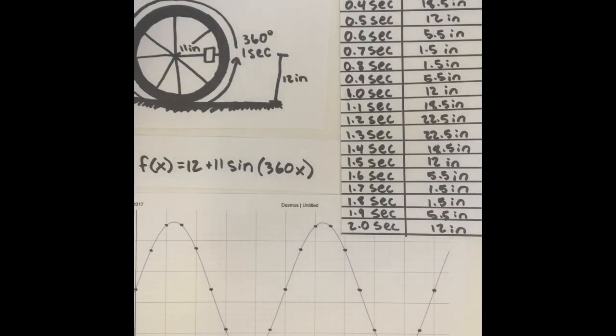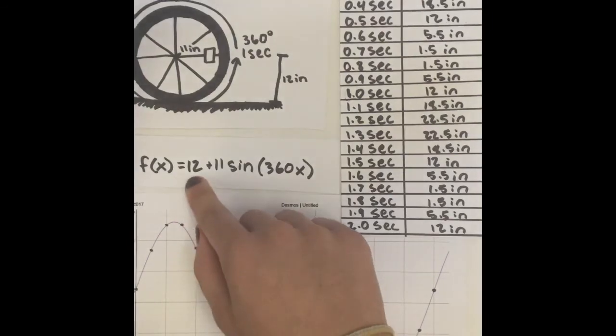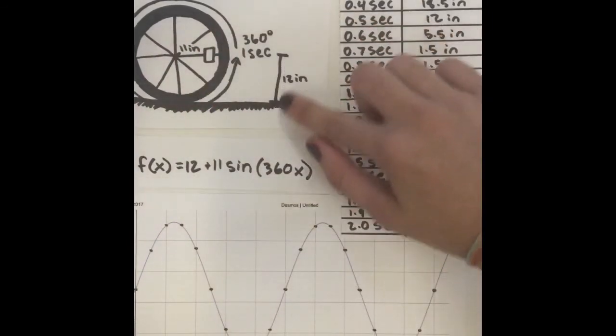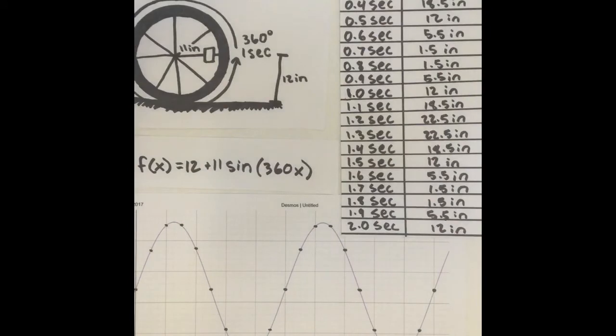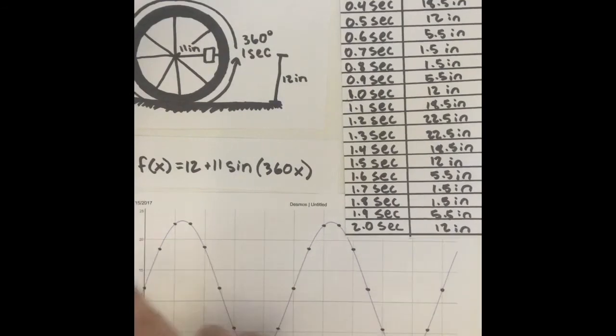The 12 comes from how high off the ground to the center of the wheel of the bike, so this 12 represents this number right here. And on the graph, it shows the y-intercept, which is also the center of the graph, which is at 12.